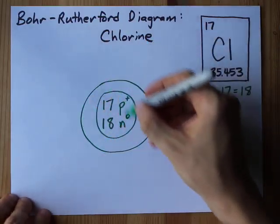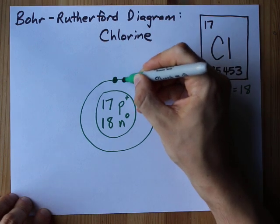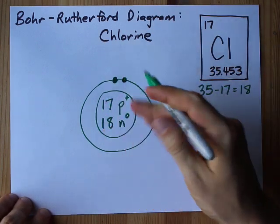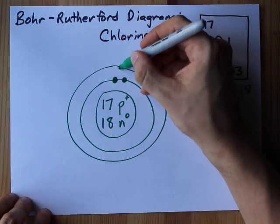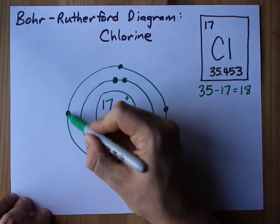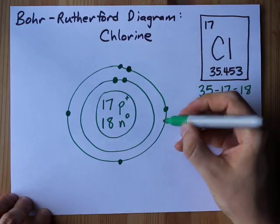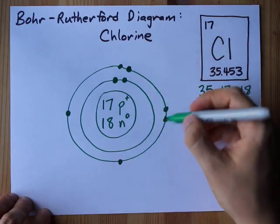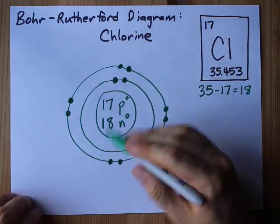First shell can hold up to 2 and I need 17 so I'm definitely going to fill that up: 1, 2. The second shell can hold up to 8. I'm definitely going to fill that up too. I'm spreading them out before I double them up: 1, 2, 3, 4, 5, 6, 7, and 8. Alright, that's 10.